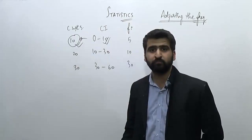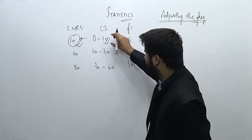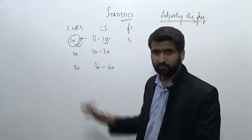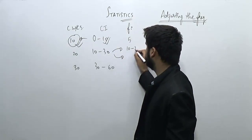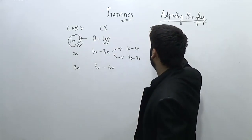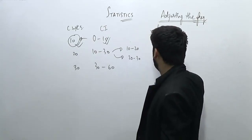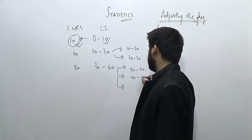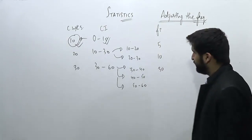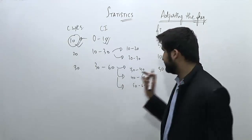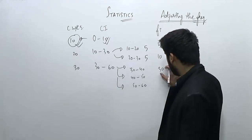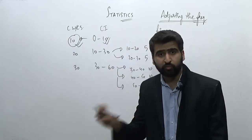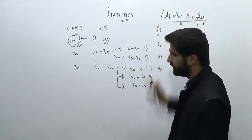We try to make the frequencies according to the minimum width. Assume the first class interval is 0 to 10. We divide the second class, 10 to 30, into two parts: 10 to 20 and 20 to 30, and the third class, 30 to 60, into three parts: 30 to 40, 40 to 50, and 50 to 60. The adjusted frequencies for the second class become 5 and 5, and for the third class 10, 10, and 10 — dividing larger class widths into the smallest class width and adjusting frequencies accordingly.